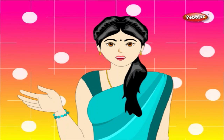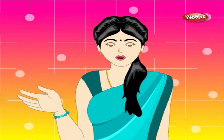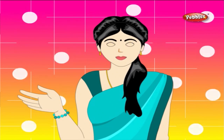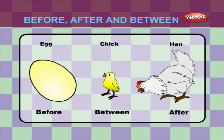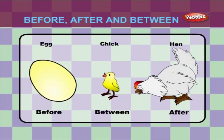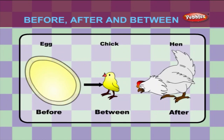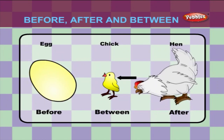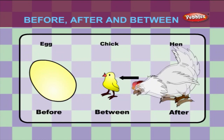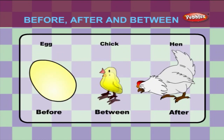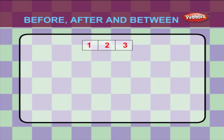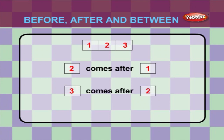Now, let us learn about the numbers that come before, after, and between other numbers. In this figure, you can see the position of the egg, chick, and the hen. The egg is before the chick, and the hen is after the chick. The chick is found between the egg and the hen. Let us take the first three numbers: one, two, and three. Two comes after one, and three comes after two.